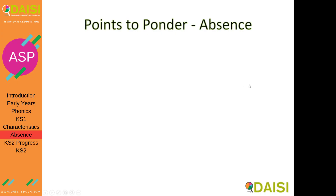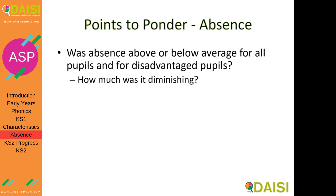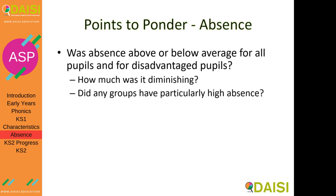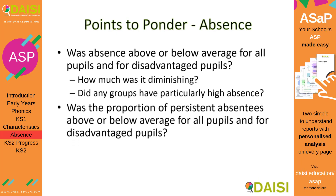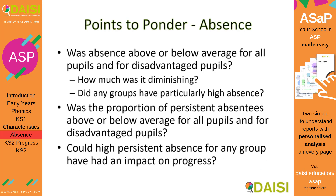Here are some points to ponder regarding absence. Was absence above or below average for all pupils and for your disadvantaged pupils? And not just a one-year account — have a look at the three-year account and see how much it was diminishing. Did any particular groups have particularly high absence? Was the proportion of persistent absentees above or below average for all pupils and for disadvantaged pupils? And could high persistent absence for any particular group have an impact on progress?